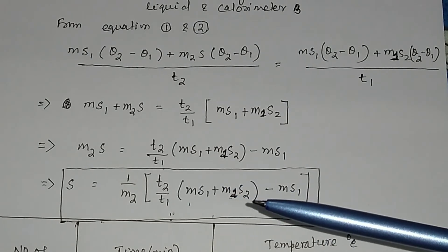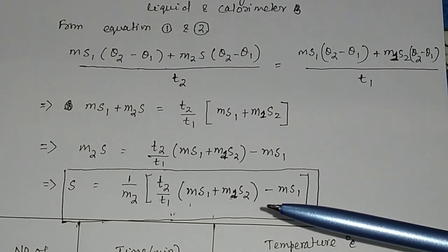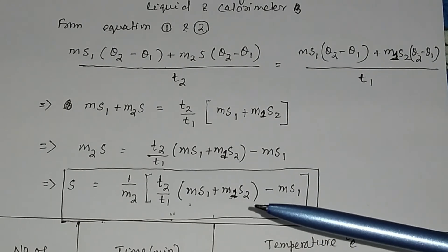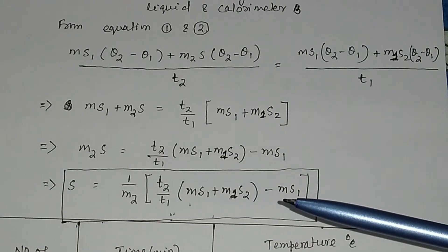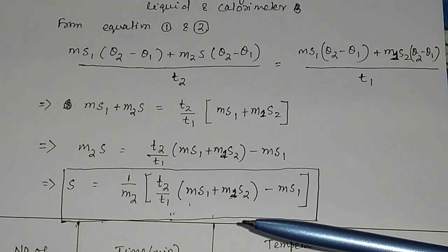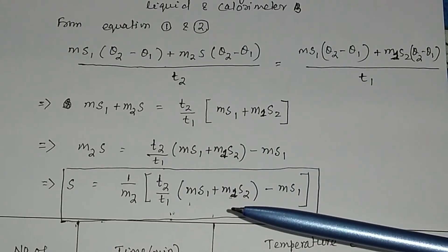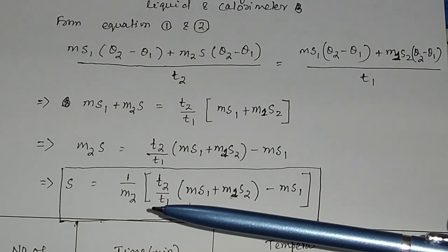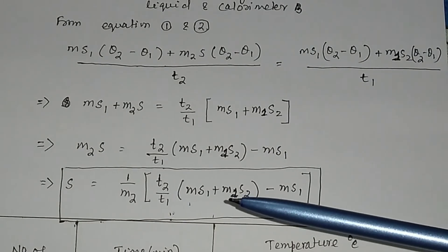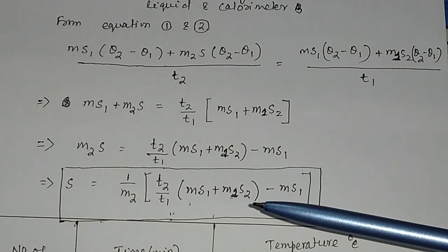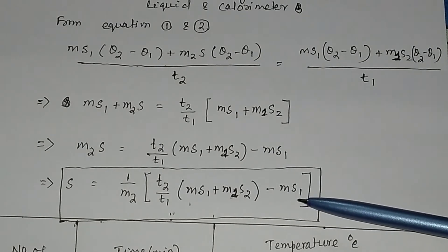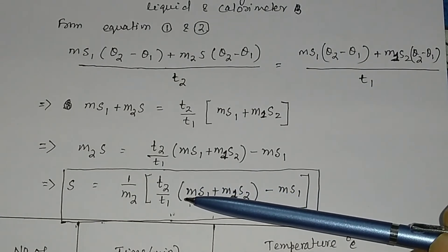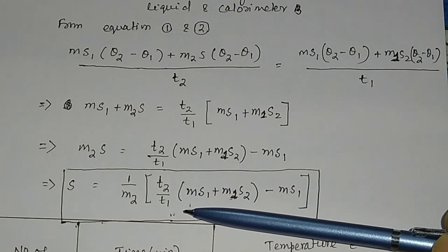Solving this equation, the specific heat of the experimental liquid S equals (1/M2) times (T2/T1) times (M·S1 + M1·S2) minus M·S1. The values of M (calorimeter mass), M1 (mass of V volume of water), and M2 (mass of V volume of kerosene) are all determined by balance. S1, the specific heat of the calorimeter (copper), and S2, the specific heat of water, are standard known values. The only unknown to find experimentally is the ratio T2 divided by T1.